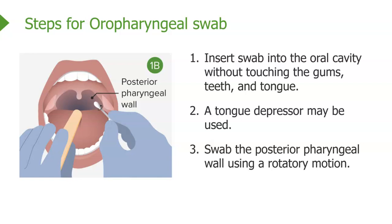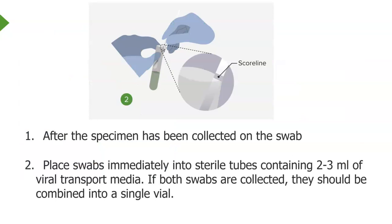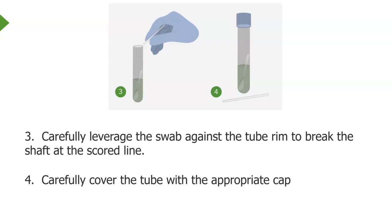After collecting the specimen, immediately place the swab into sterile tubes containing two to three milliliters of transport media. If you collected one from the nose and one from the mouth, both should be combined into a single vial. In the picture, you'll see a score line on the swab shaft — carefully leverage the swab against the tube rim to break the shaft right at that scored line.